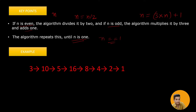Let's look at an example. Suppose n is 3. Since 3 is an odd number, we are going to multiply it by 3 and add 1, which gives us 10. Now 10 is an even number, so we divide it by 2, which results in 5.